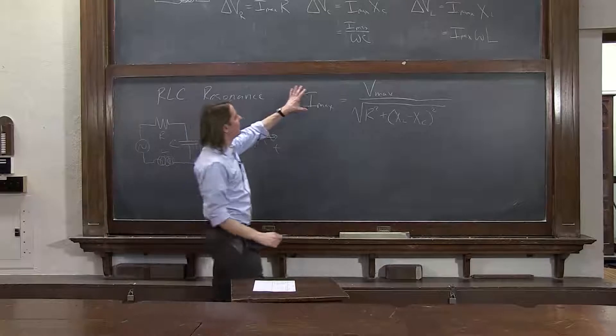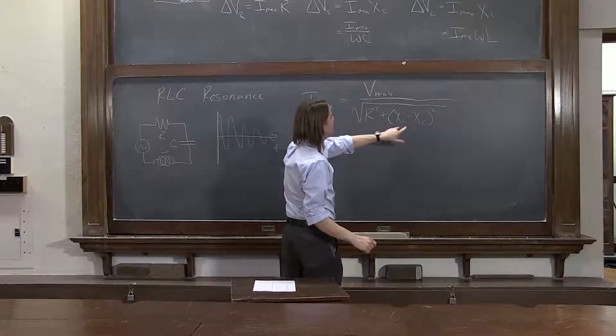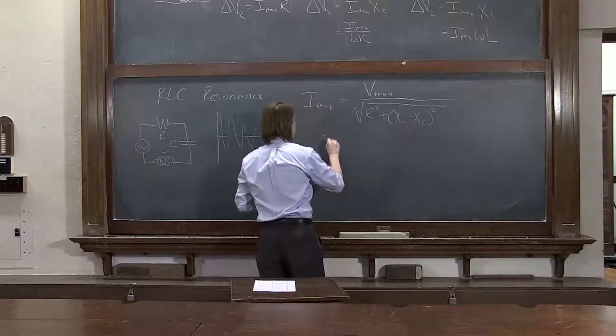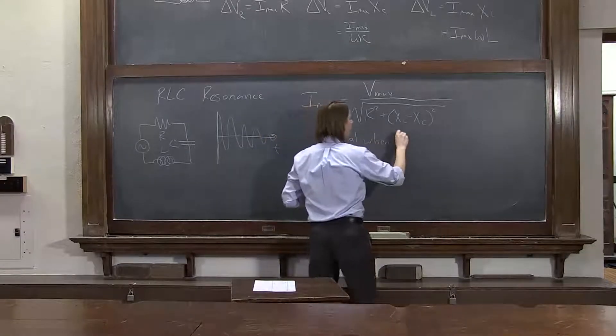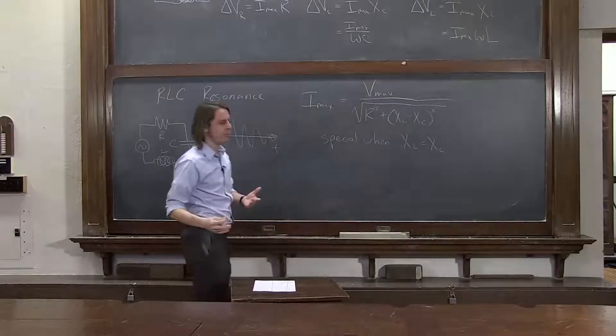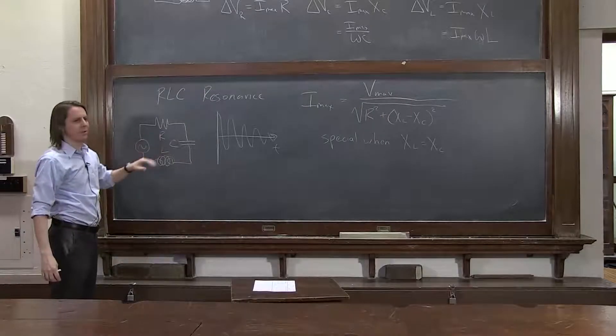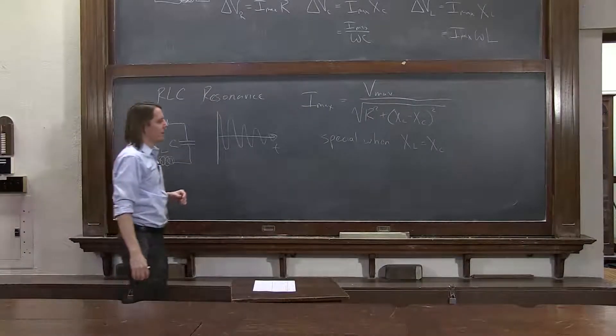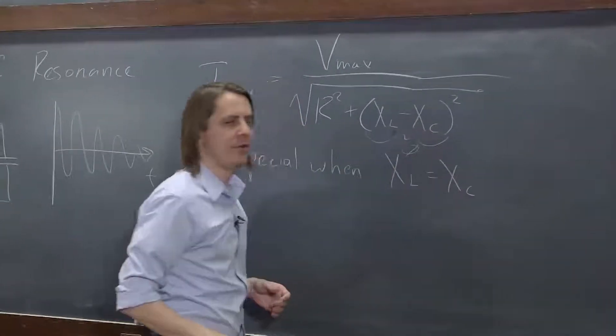So you can look at this and say, well, I want the current. What's it going to be? It's going to be V over something. And you realize there's something special when these two are equal. Not that they're zero. You don't have to get rid of the capacitor and the inductor. Just when they have just the right value that they're equal.